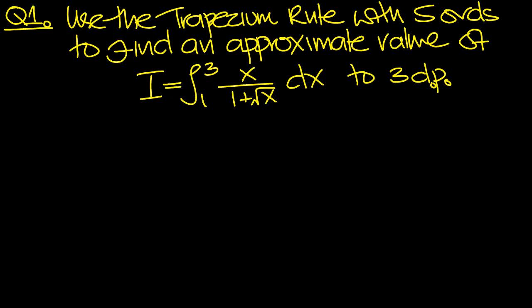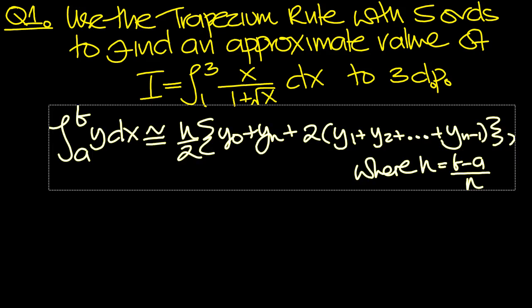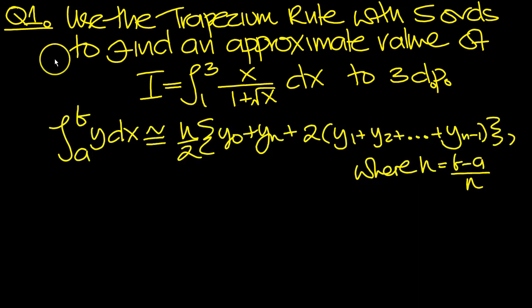So we need to paste in the Trapezium Rule formula, so I've got it here. So let's have a go then. So here's the formula. It says with 5 ordinates, doesn't it? So n will be 4. So we can put n as 4. So let's just put that down here.